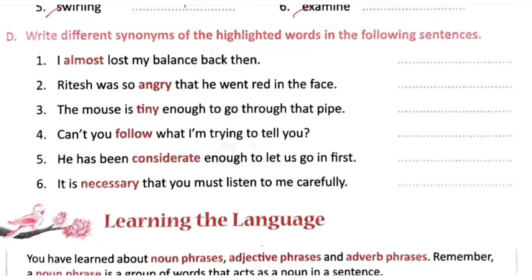Read different synonyms of the highlighted words in the following sentences. 'I almost lost my balance back then' — instead of 'almost' you can write 'nearly.' 'He was so angry that he went red in the face' — instead of 'angry' you can write 'enraged.' 'The mouse is tiny enough to go through that pipe' — instead of 'tiny' you can write 'little' or 'small.'